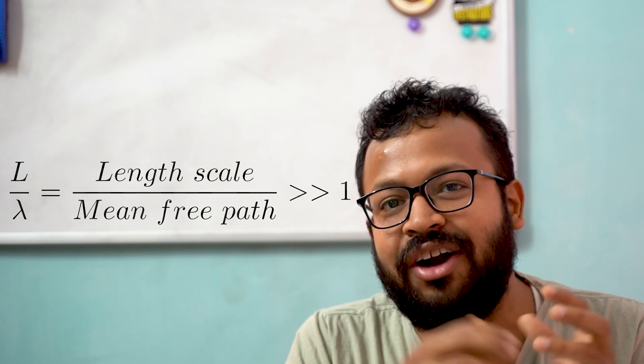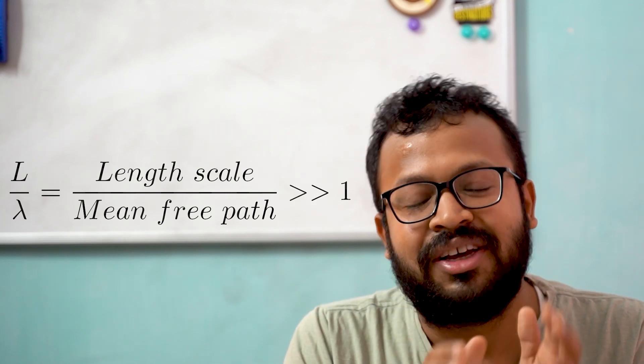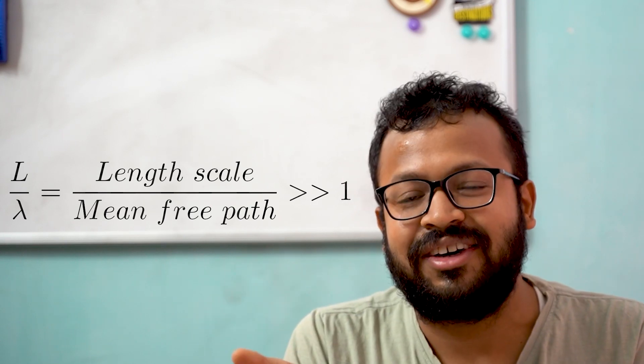So the question is: can we do some sort of simplification so that we're not really understanding how each molecule behaves, but we are able to understand the gross effect produced by all of these molecules put together? One of the length scales that characterizes this molecular motion is the mean free path — the average distance a molecule travels before it collides with another molecule. The continuum assumption says that as long as the characteristic scale of our medium is large enough compared to this mean free path, we can treat the substance as a continuous distribution, and this makes our life so much easier.